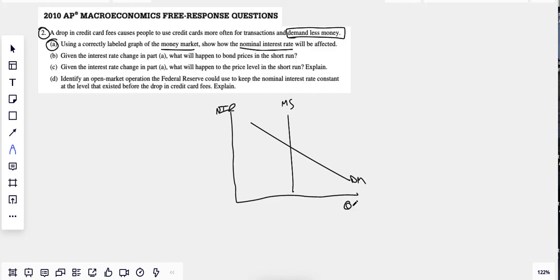They're telling you people demand less money. This is the demand for money - it shifts to the left. There's less demand. What happens to nominal interest rates? If you said they go down, give yourself a cigar, nicely done. Interest rate one, interest rate two. We could do QM one here if we wanted.